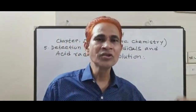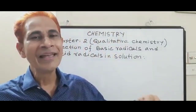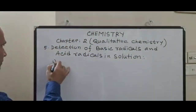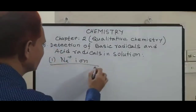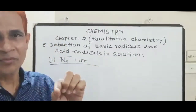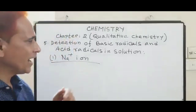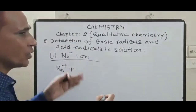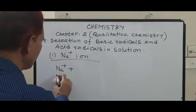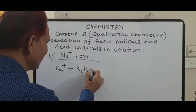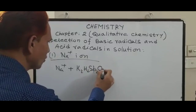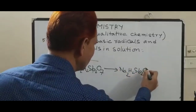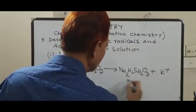From this stock solution, you take a small amount in another test tube and detect cations and anions one by one. First, sodium ion: you take one to two millilitres of stock solution in a test tube, then add potassium pyroantimoniate. If you obtain a white precipitation, then you confirm sodium ion is present in your sample. The reaction is: sodium ion plus potassium pyroantimoniate (K₂H₂Sb₂O₇) produces sodium pyroantimoniate (Na₂H₂Sb₂O₇) plus potassium ion — white precipitation.